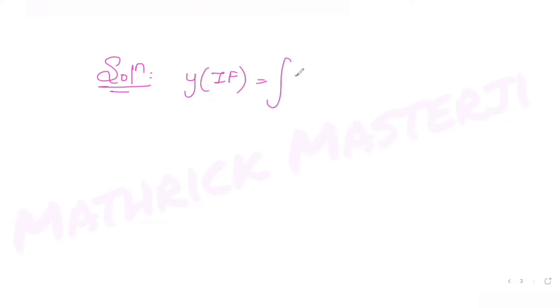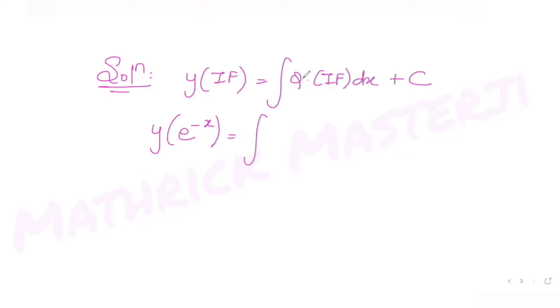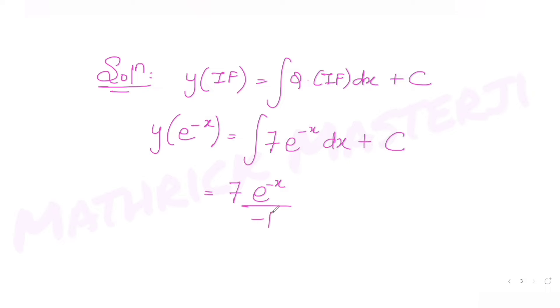With the integrating factor, the solution is y · IF = ∫(Q · IF) dx + C. Substituting, we get y · e^(−x) = ∫7 · e^(−x) dx + C, which gives 7 · e^(−x) / (−1) + C.